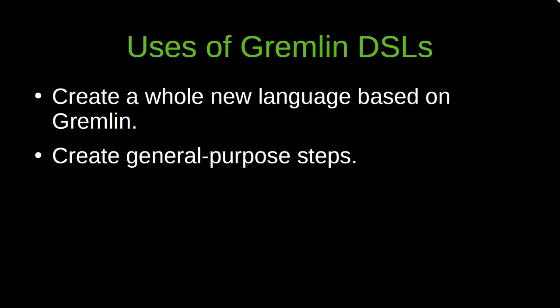So when will you want to use Gremlin DSLs? You can use it to create a whole new language based on Gremlin — probably a higher level language that is specific to your domain. For example, if you're working on a family tree application, maybe you'll want to define steps like 'grandfather' to navigate from the current vertex to its grandfather, or a step called 'siblings' to navigate to its siblings. You could cover the Gremlin traversal language completely so that your clients only call your domain-specific language.